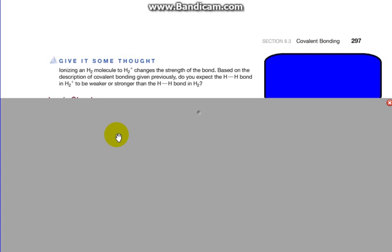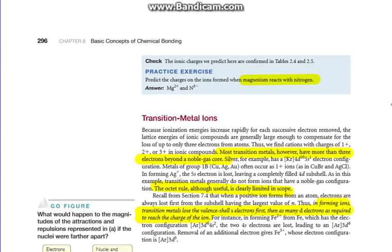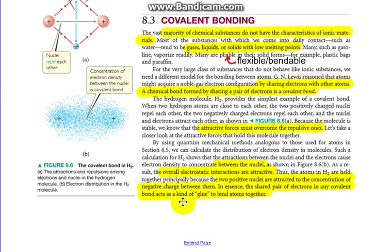Ionizing an H2 molecule to become an H2+ molecule—of course, to do that, you'd have to take away one of those electrons—changes the strength of the bond. Based on the description of covalent bonding previously given, do you expect the HH bond in H2+ that has one electron gone to be weaker or stronger than the HH bond in a regular H2 molecule? So what we just talked about is that the electrons act as a kind of glue, holding it together. Obviously if I take one of those electrons away,